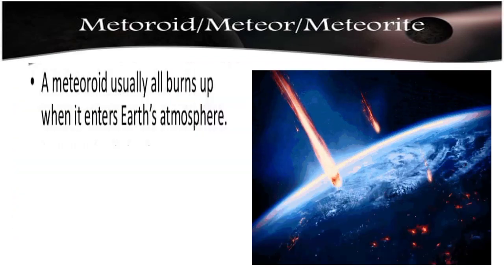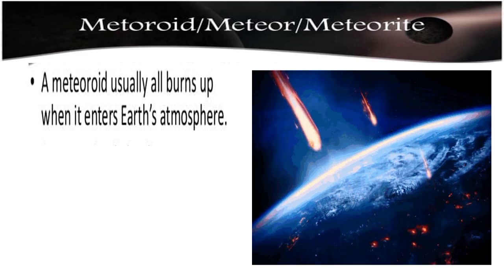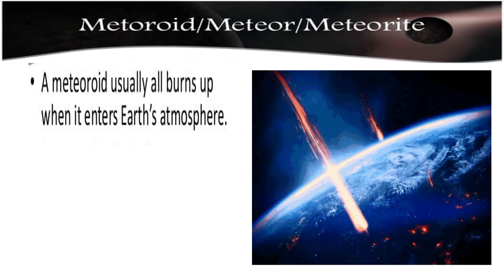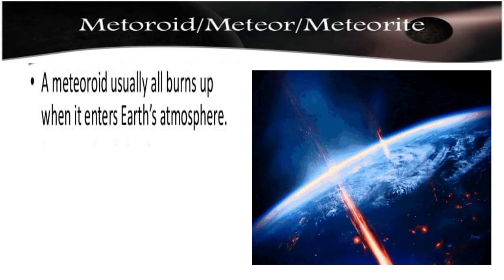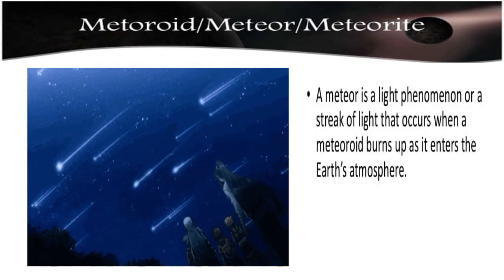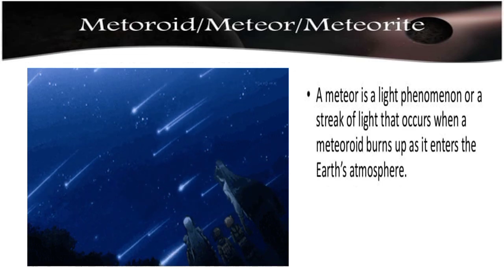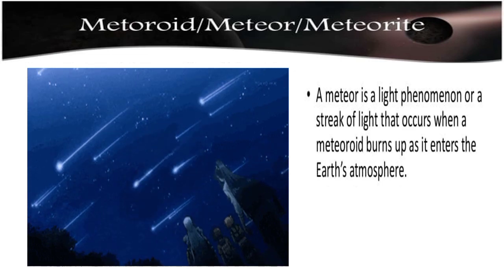A meteoroid is a small body moving in the solar system that would become a meteor if it entered the Earth's atmosphere. A meteoroid usually burns up when it enters the Earth's atmosphere. A meteor is a light phenomenon or a streak of light that occurs when a meteoroid burns up as it enters the Earth's atmosphere.